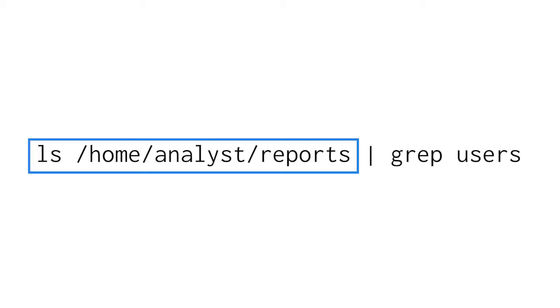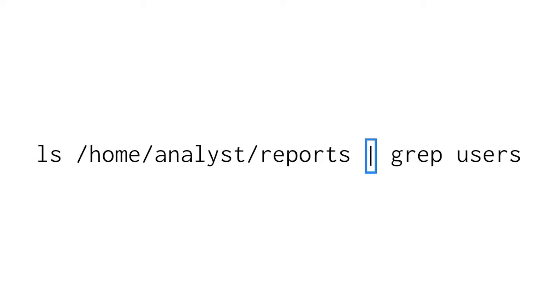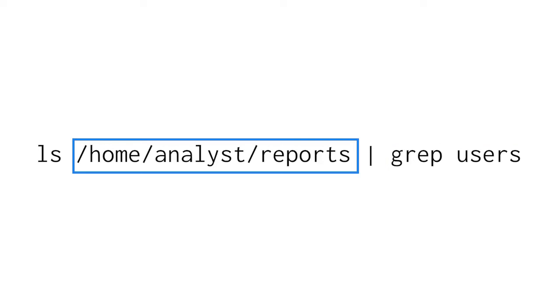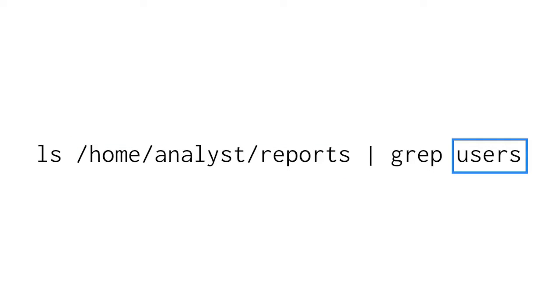Let's focus on this example. The first command, ls, instructs the operating system to output the file and directory contents of the reports subdirectory. But because the command is followed by the pipe, the output isn't returned to the screen — instead, it's sent to the next command. Grep searches for a specified string of characters; in this case, 'users'. Since grep follows a pipe, the output of the previous command indicates where to search. That output is a list of files and directories within the reports subdirectory, and it will return all files and directories that contain the word 'users'.